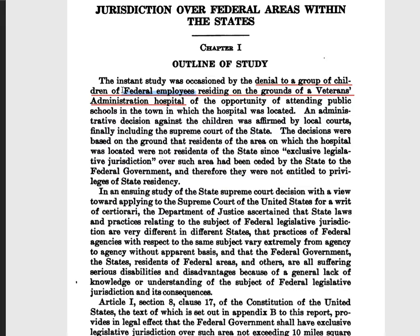It's basically the same thing in the United States of America — we call them states, but you could look at them as little countries; in some cases, very big ones. Texas's economy is greater than that of Europe's. These people lived on the federal lands permanently — this was their permanent residence. They were citizens of this place. The state says that because the federal government purchased the lands, they were given all the rights over those lands — exclusive legislative jurisdiction — meaning they were allowed to make the laws for the lands.